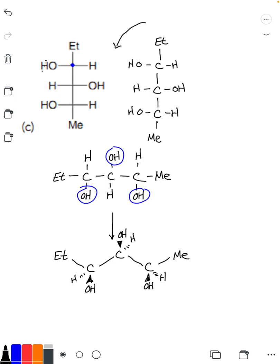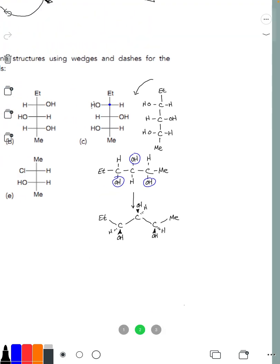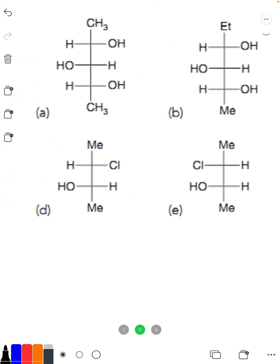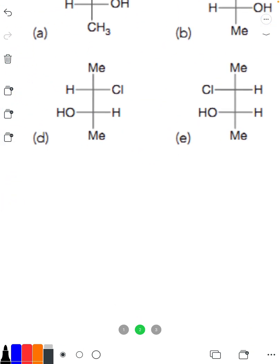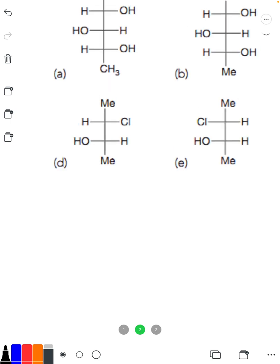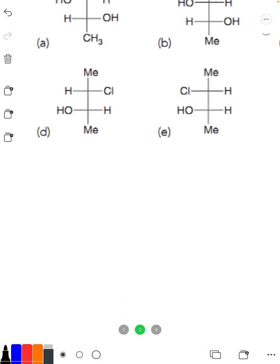The short version of this is that if I only have two stereocenters, I can just draw it exactly as shown in the picture. Let me zoom out and look at maybe part D here to see that as an example. In this case, I have only two stereocenters—I'm showing the chlorine going in one direction and the OH going in the other direction.